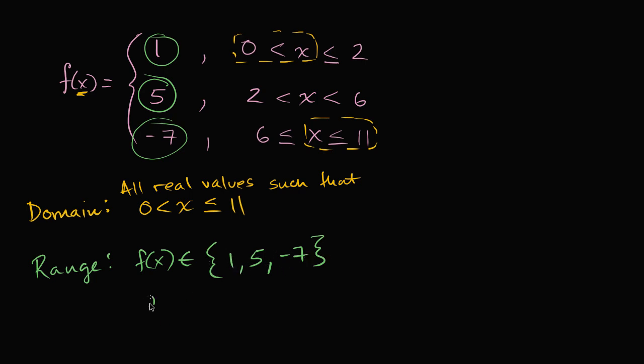Another way to say it is that f of x is going to be equal to one, five, or negative seven.